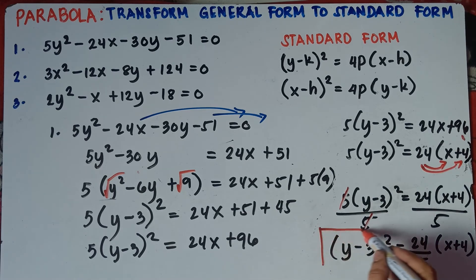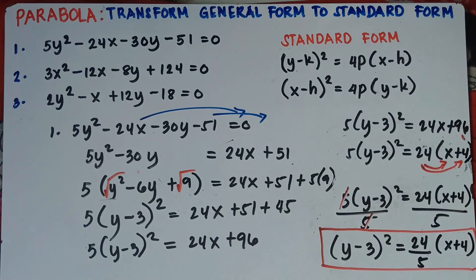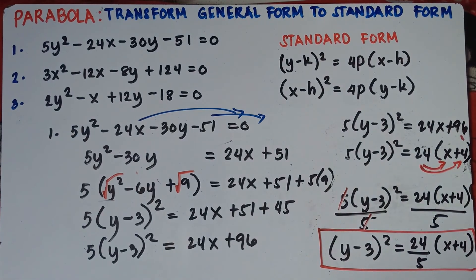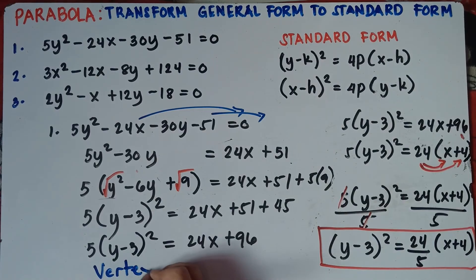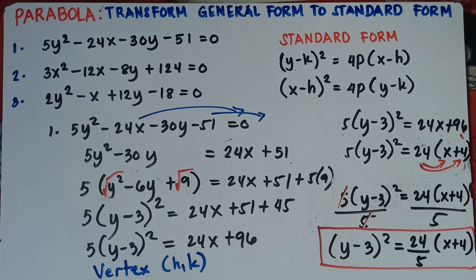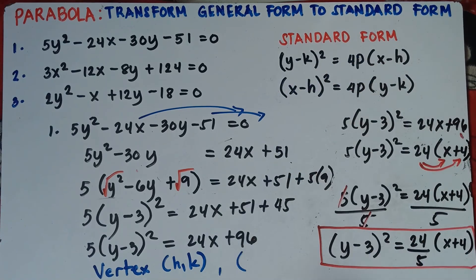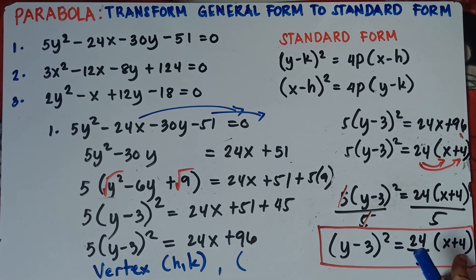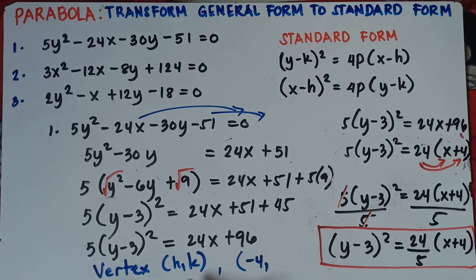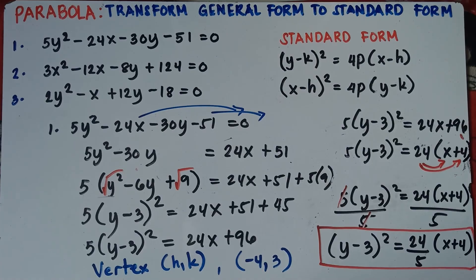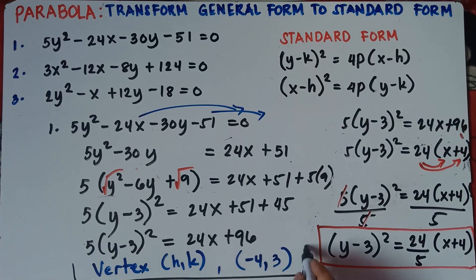If the teacher asks for the vertex h comma k: h is beside x, and k is beside y. The value beside x is positive 4, so you take the additive inverse — h is negative 4. The value beside y is negative 3, so you take the additive inverse — k is positive 3. The vertex is negative 4 comma 3. All set for number 1.